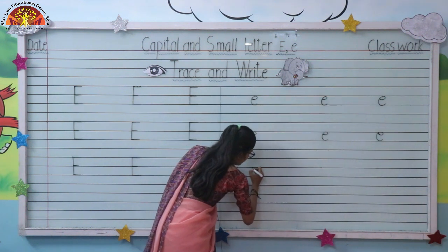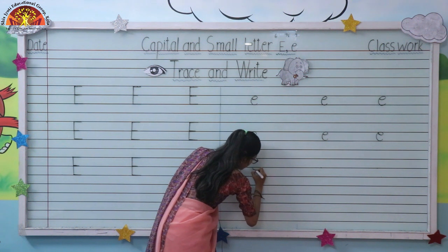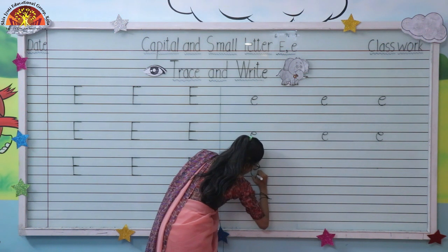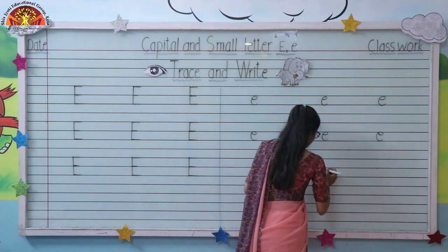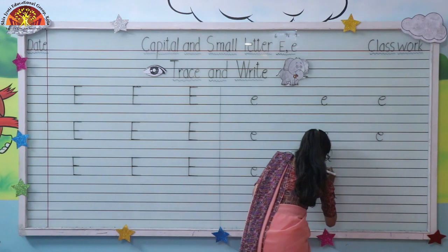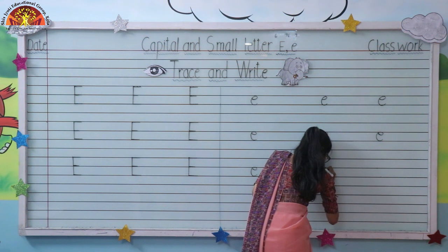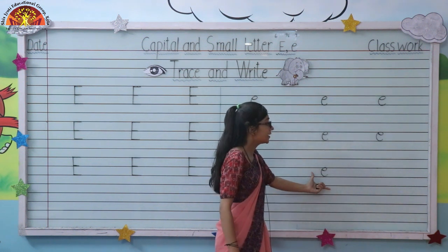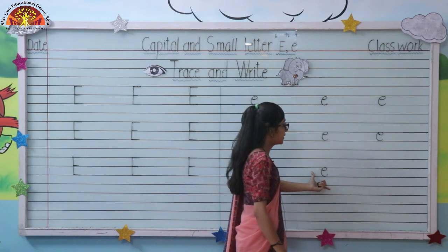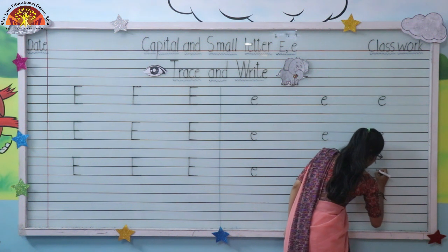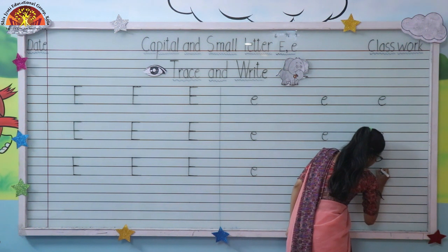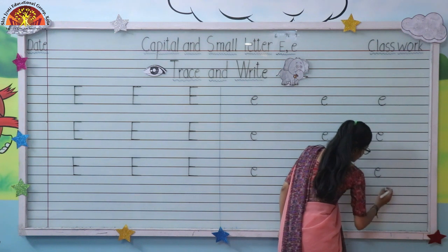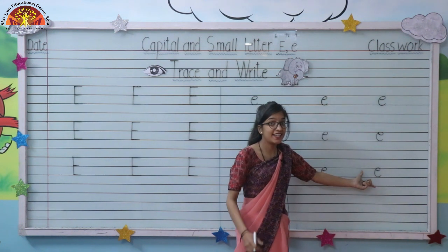One more time — look here, start from here, loop, touch first line, small curve, touch second line, up. One more time: start from here, loop, touch first line, curve, touch second line, up. This is small letter E. Start from here kids — loop, touch first line, curve, touch second line, up. This is small letter E.